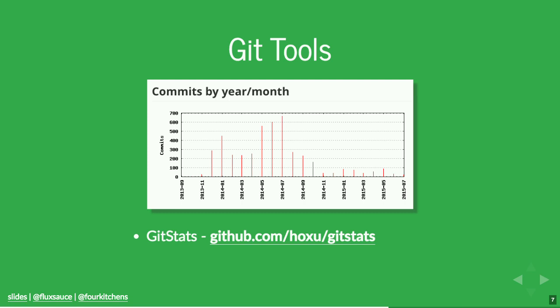Git stats and Git Inspector both produce similar results — your mileage may vary. They also get into the activity of individual contributors. For example, so-and-so put a hundred thousand lines of code into the codebase — well, that's interesting. Was that needed? And then they immediately removed a hundred thousand lines in the next commit. Okay, that happens.